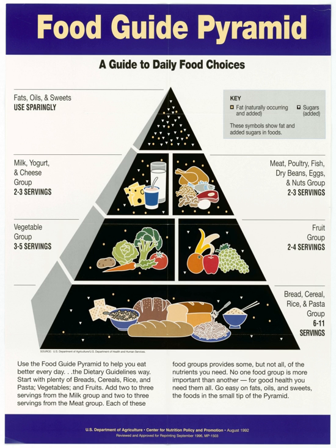The weight of eating companions may also influence the volume of food consumed. Obese individuals have been found to eat significantly more in the presence of other obese individuals compared to normal weight others, while normal weight individuals' eating appears unaffected. Although the presence and behavior of others can have a strong impact on eating behavior, many individuals are not aware of these effects and instead tend to attribute their eating behavior primarily to factors such as hunger and taste.